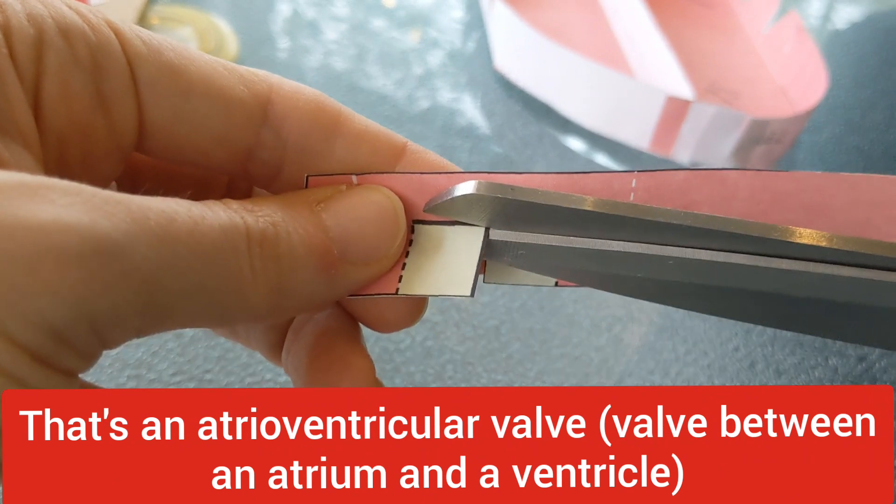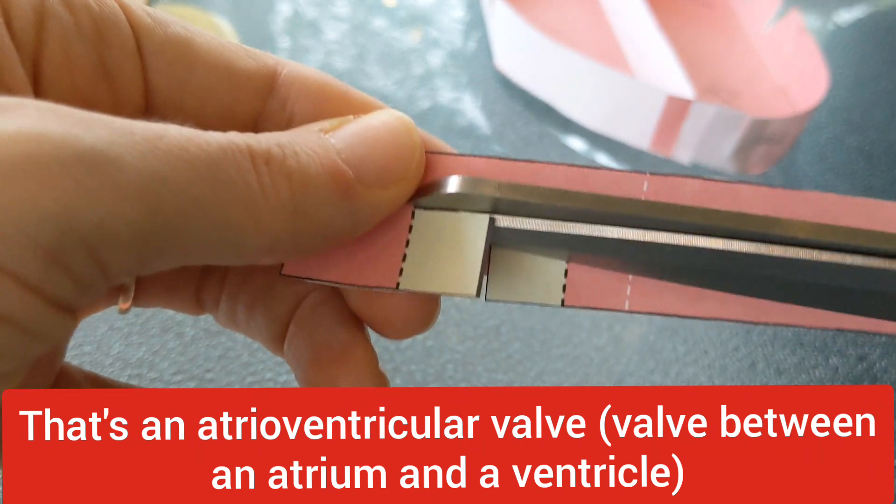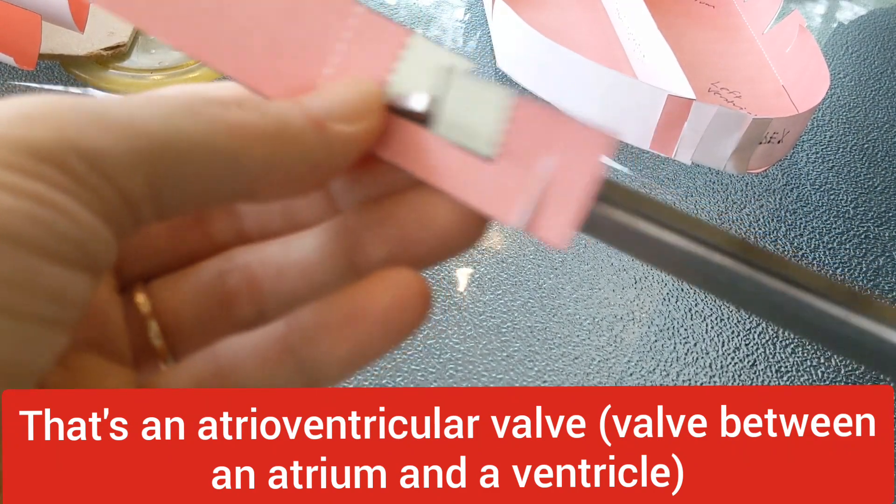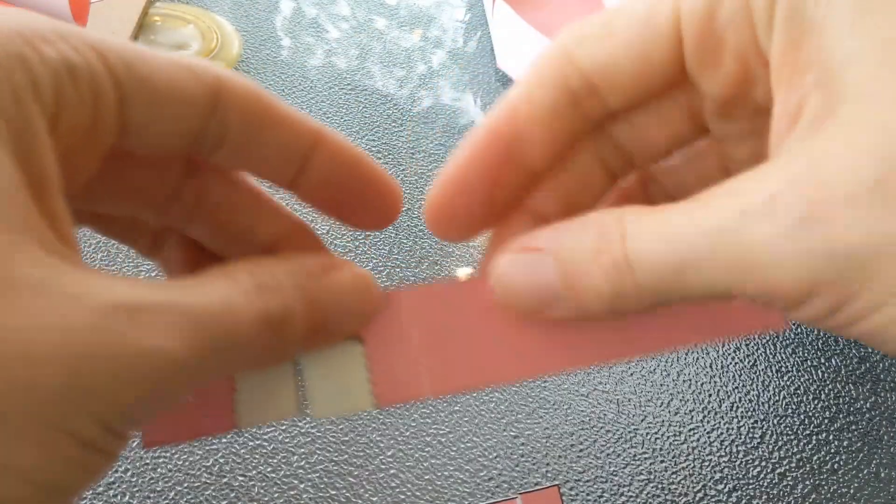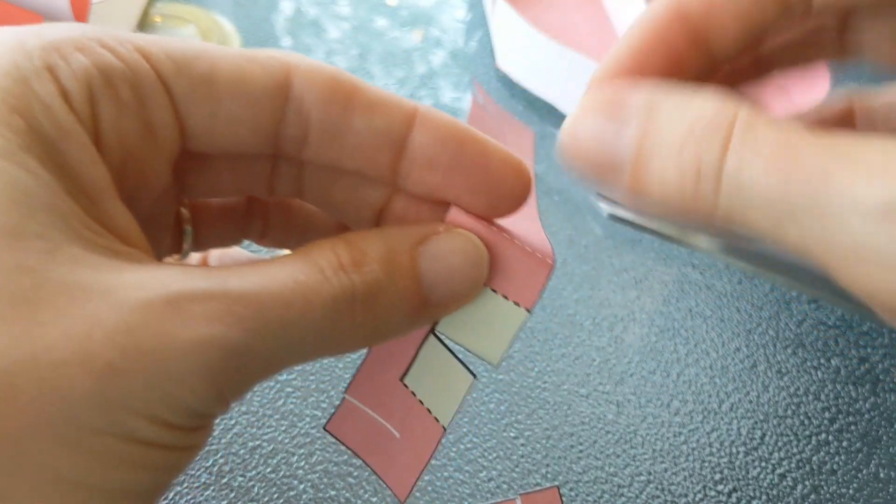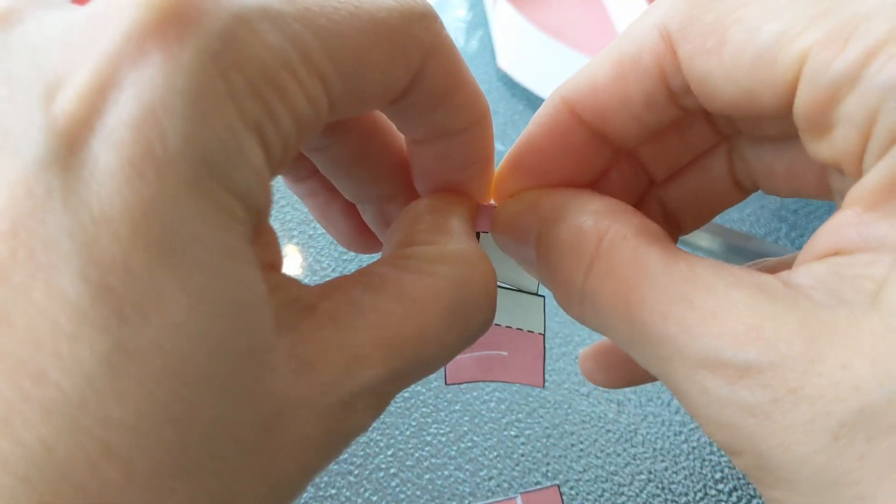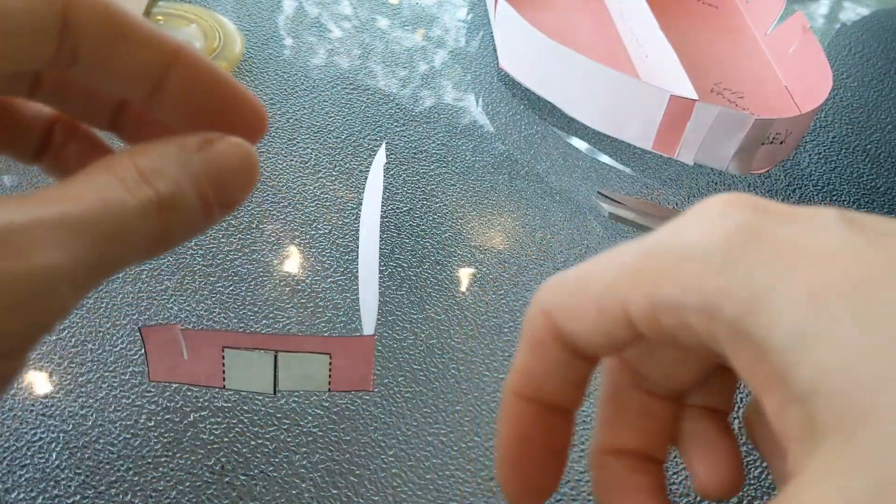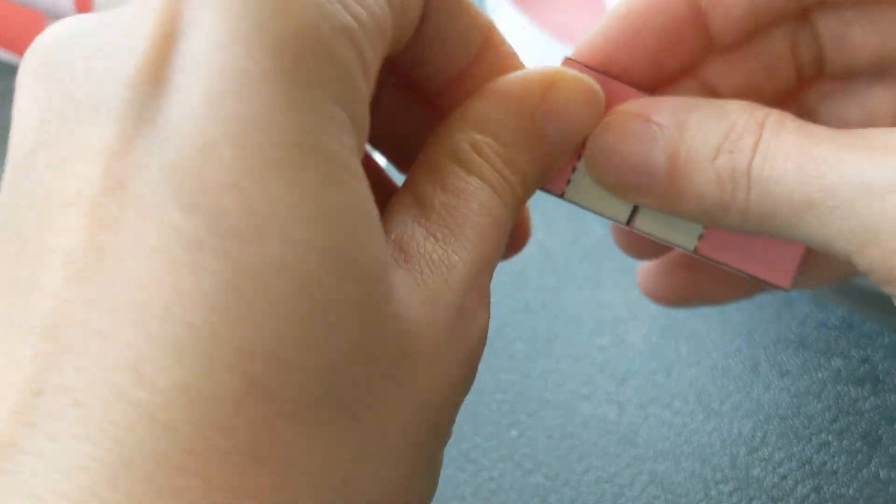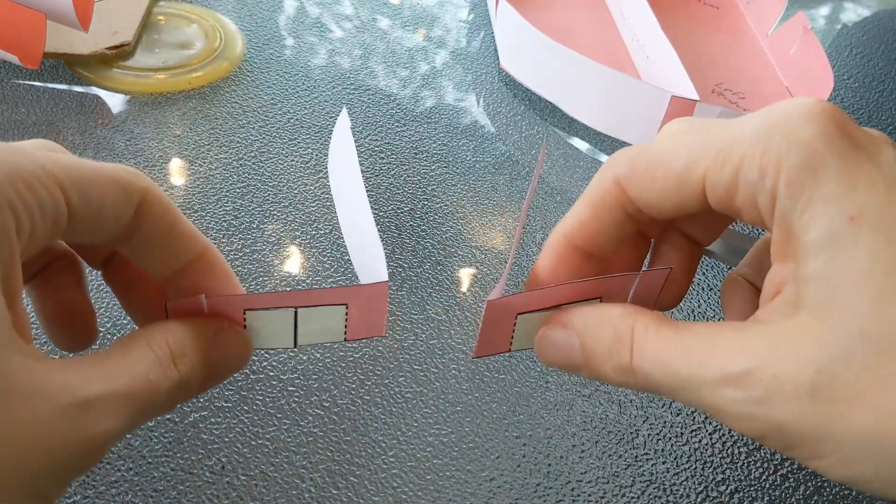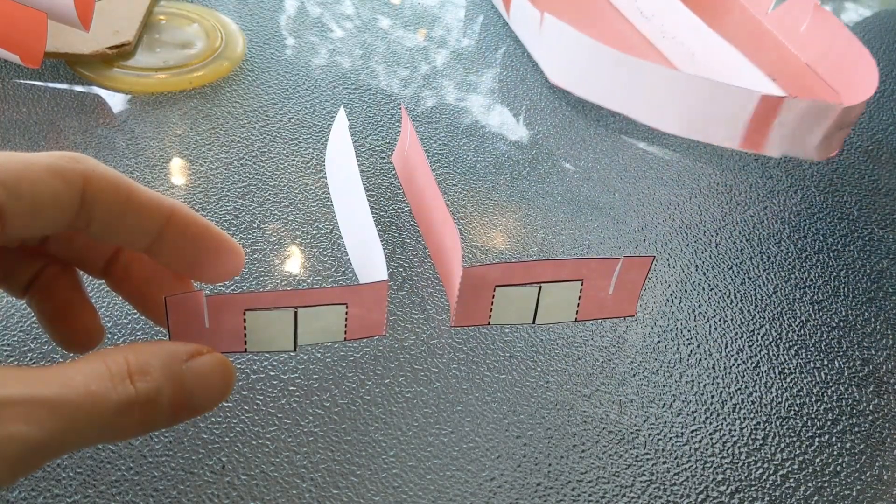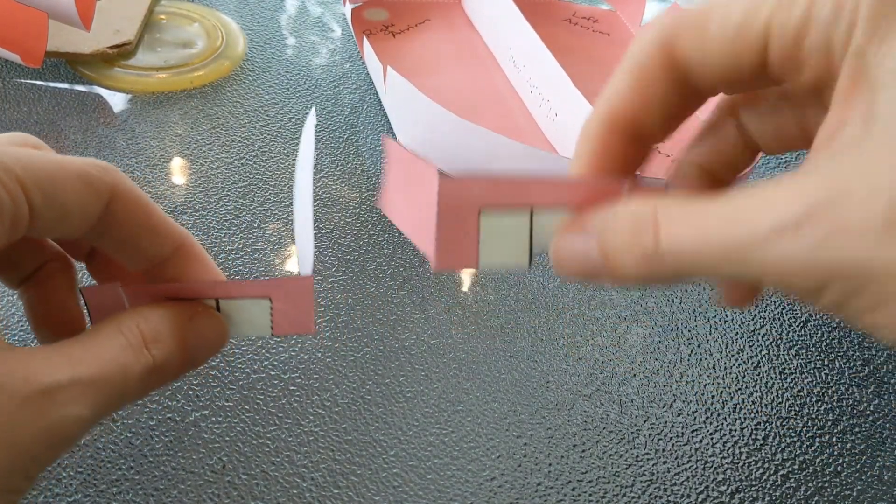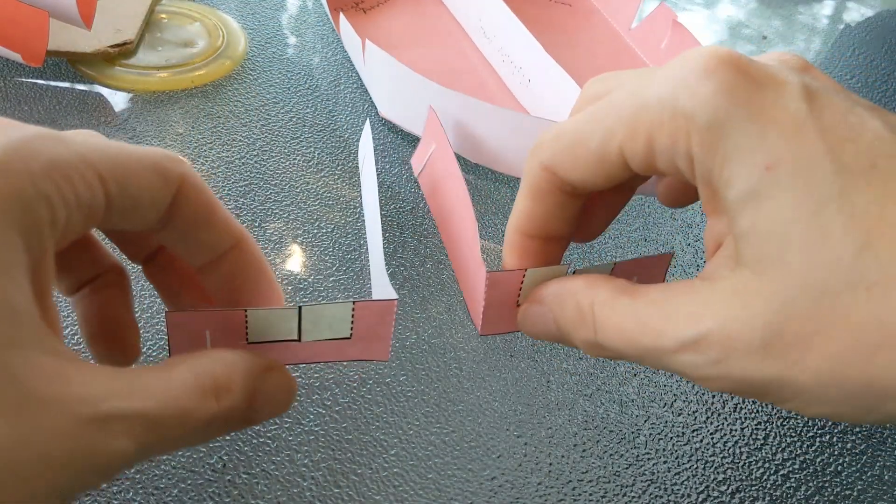These are our atrioventricular valves, the valves that separate each atria from the ventricle. The last thing to do is to fold along the dotted white line like so. So we have two mirror images. Now we're going to go ahead and put these in the heart but I actually have to flip them this way to do this.